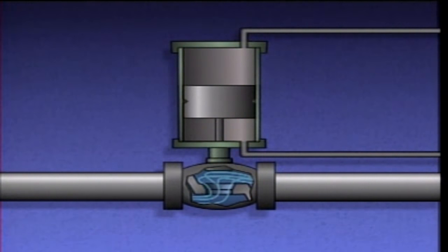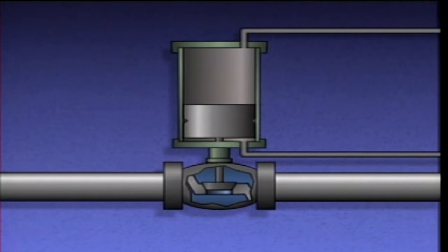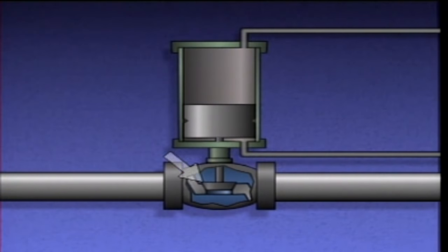When air is fed in through the supply port on the opposite end, the piston is pushed in the other direction, closing the valve. Air is bled off through the other supply port.